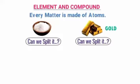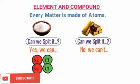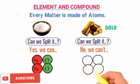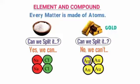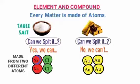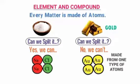For salt, the answer is yes — we can split it into sodium and chlorine. We cannot split gold into two, because gold is made from one type of atom. Therefore, table salt is made from two different items, sodium and chlorine, while gold is made from one type of atom. So gold is an element because it is made from one type of atom, and salt is a compound.